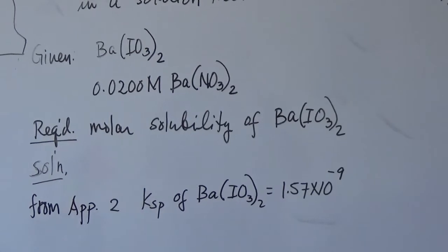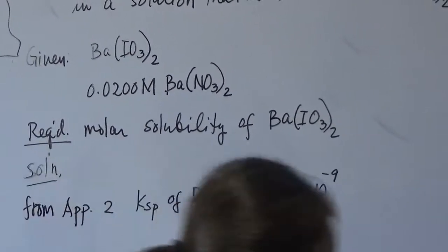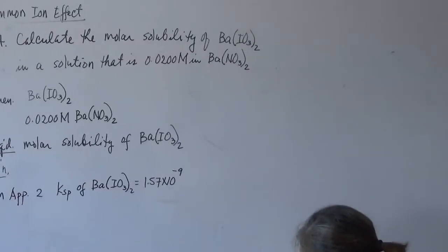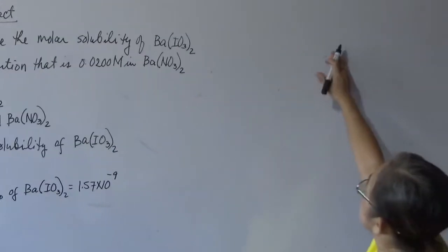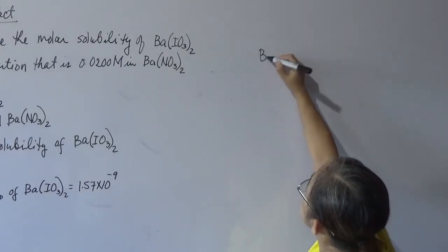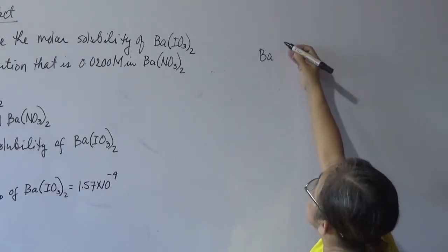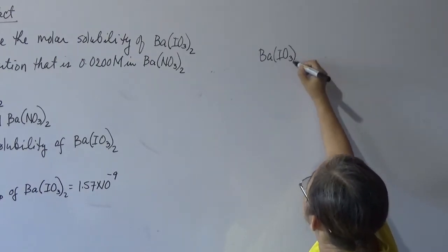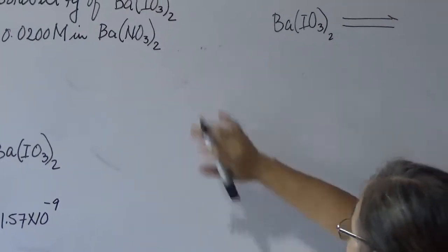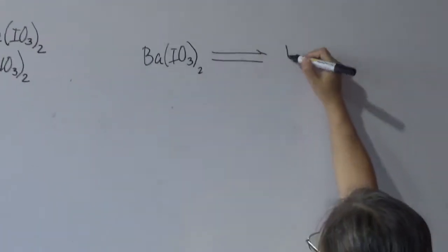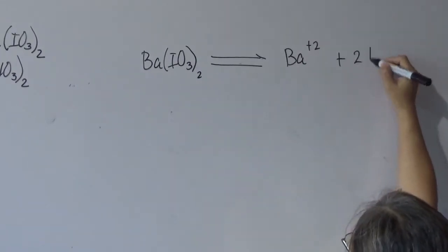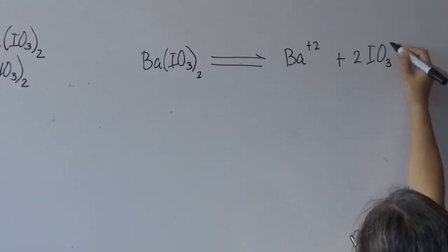We write the dissolution equation. Barium iodate dissolved in barium nitrate ionizes into barium ion and 2 moles of iodate ions. We balance the equation and will use the ICE technique.